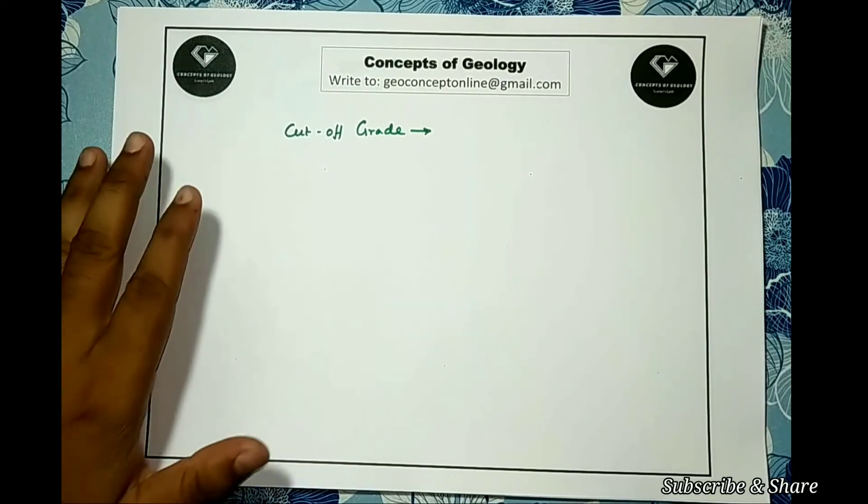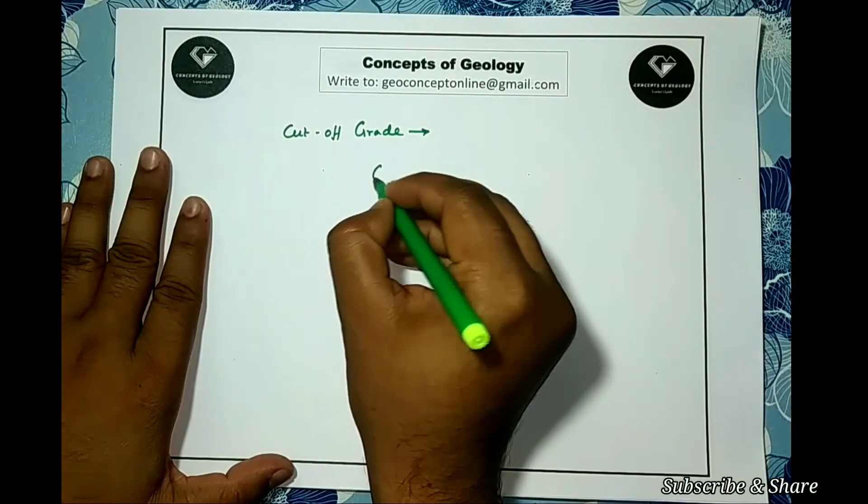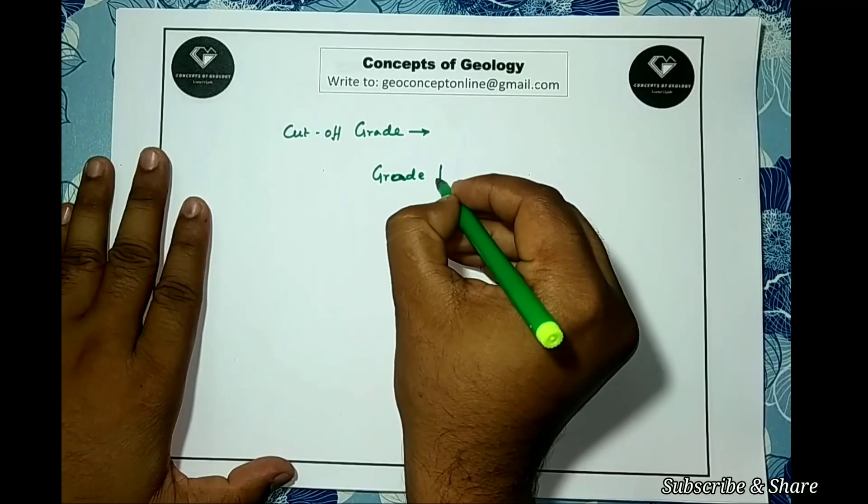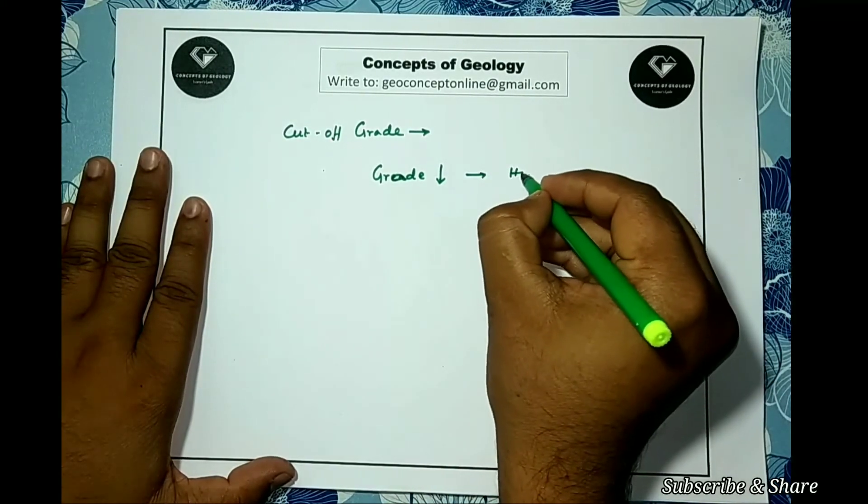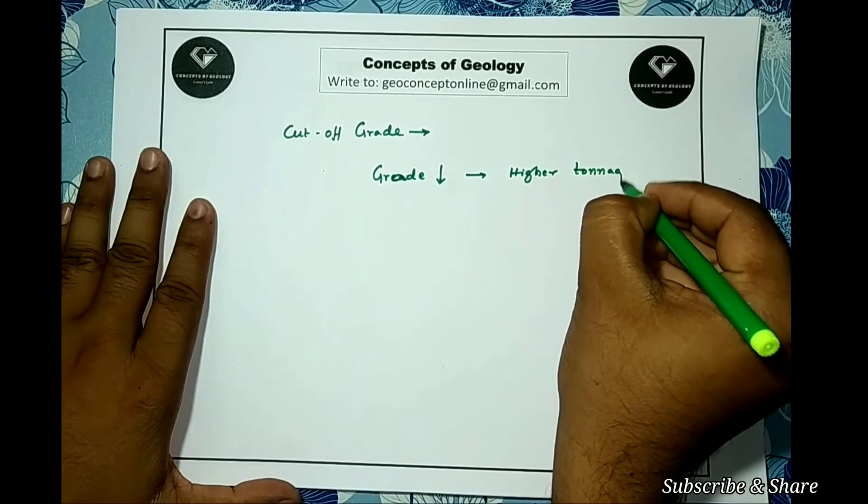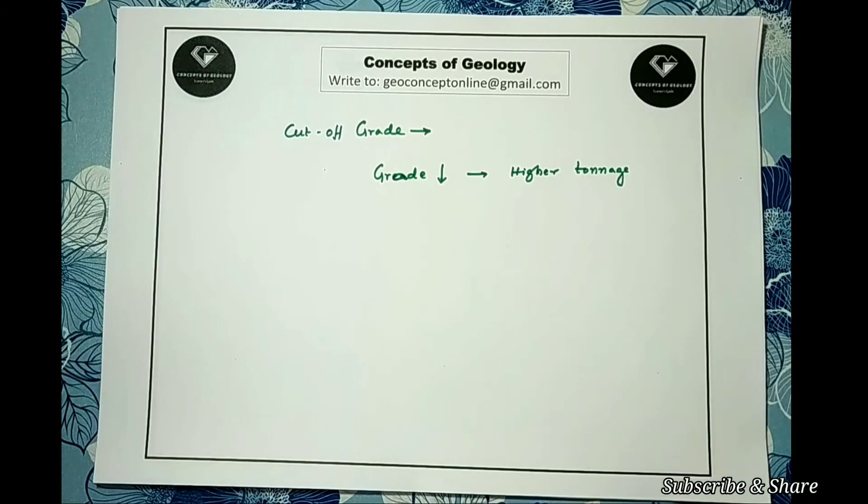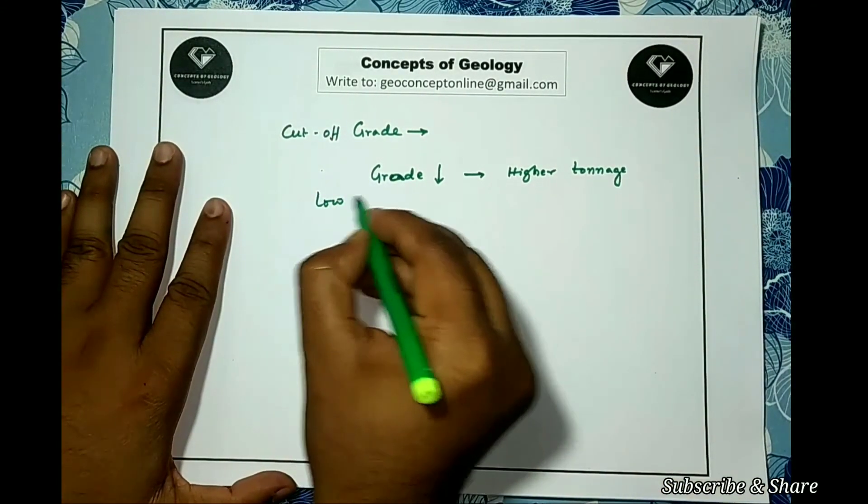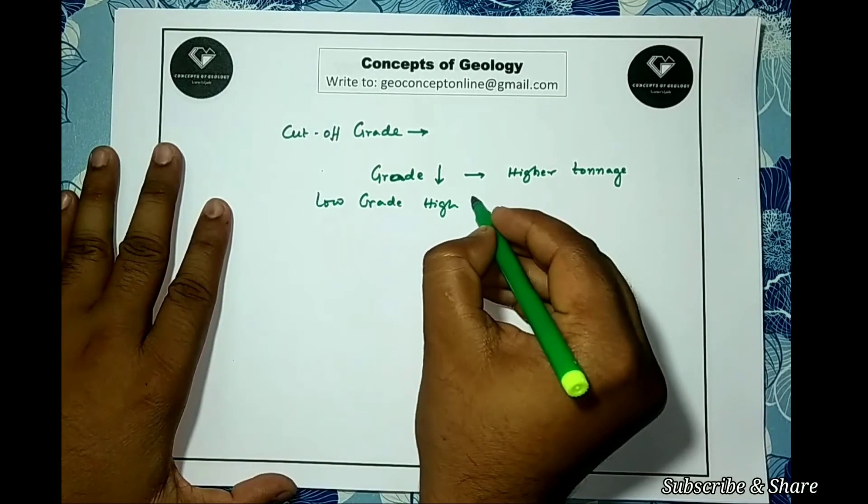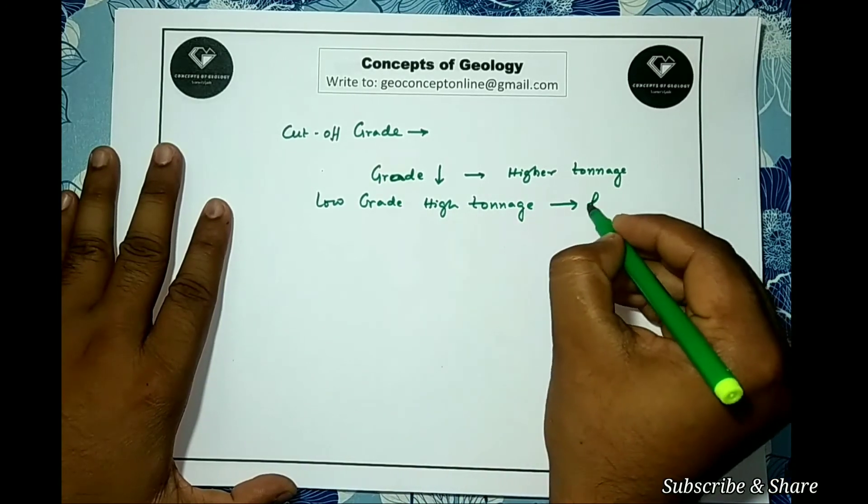Here one thing should be noted: the lower the grade will be, we need more tonnage to get a definite amount of metal to make the project profitable. They are called low grade high tonnage deposit, for example porphyry copper.